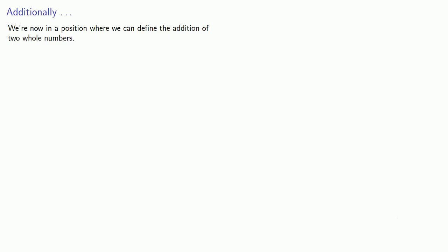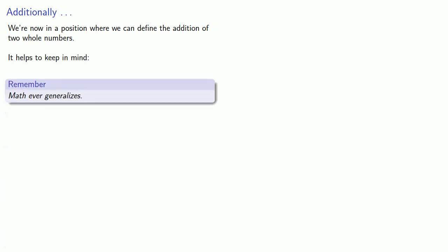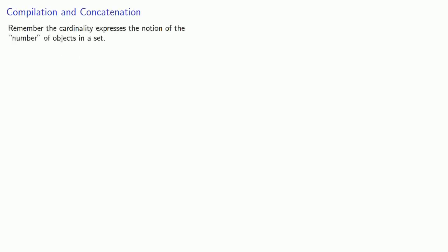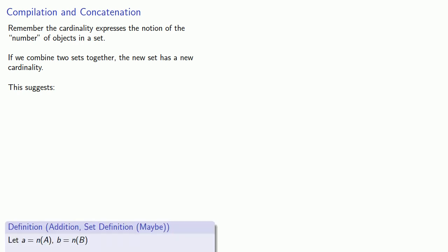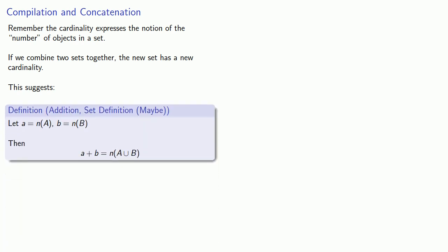We are now in a position where we can define the addition of two whole numbers, and it helps to keep in mind that math always generalizes. Remember that cardinality expresses the notion of the number of objects in a set. If we combine two sets together, the new set has a new cardinality. So suppose A is the cardinality of some set and B is the cardinality of some set. Then A plus B is the cardinality of the union of the two sets.